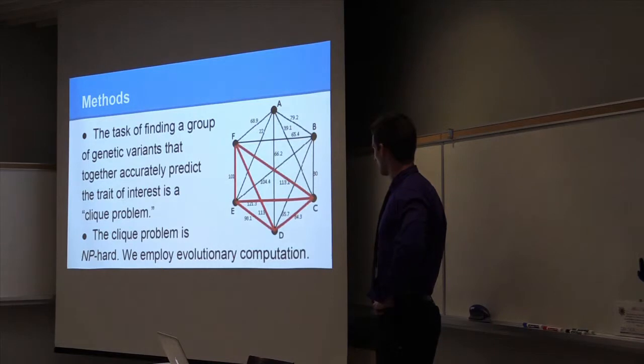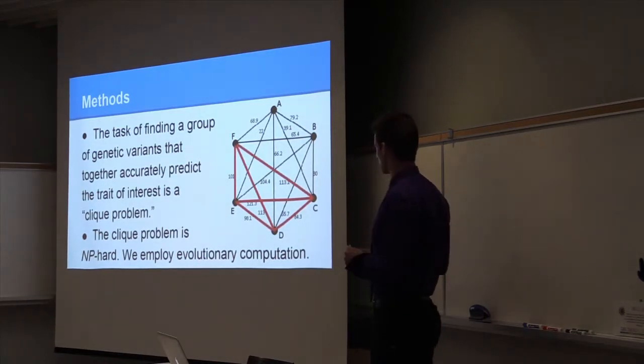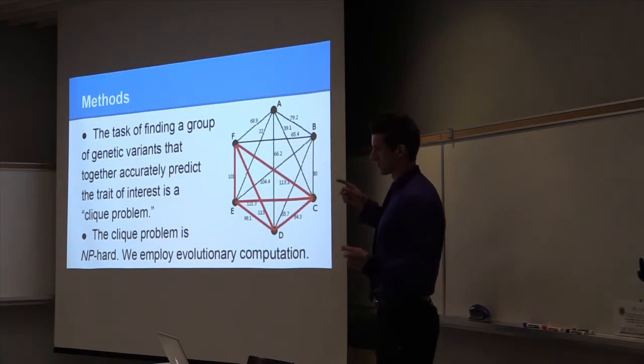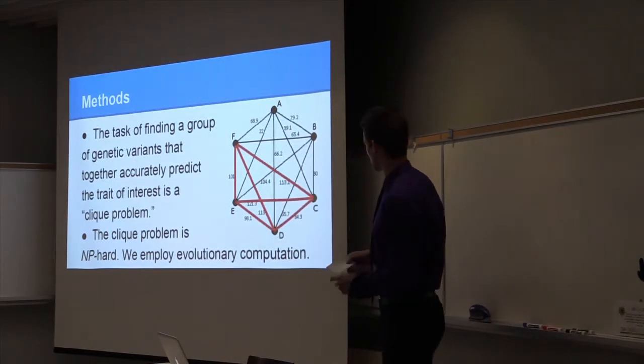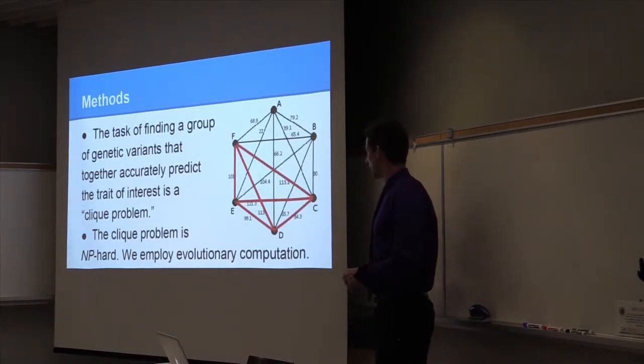So now we're searching for the subgraph of size X within our complete graph that has the maximum sum of edge weights. So in this example I've used, I've highlighted it in red. The problem is the issue with the clique problem is that it's NP-hard when our number of vertices is not trivially small.